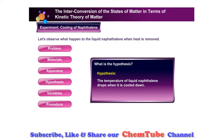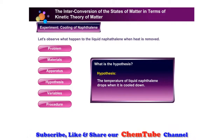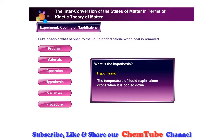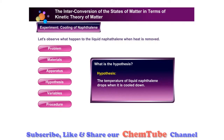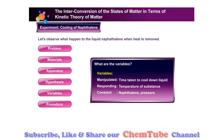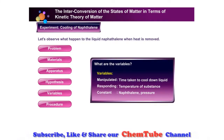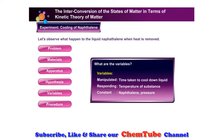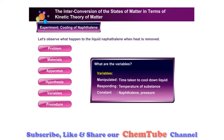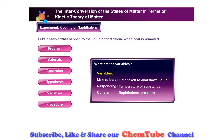Hypothesis: The temperature of liquid naphthalene drops when it is cooled down. Variables — Manipulated: time taken to cool down liquid. Responding: temperature of substance. Constant: naphthalene pressure.